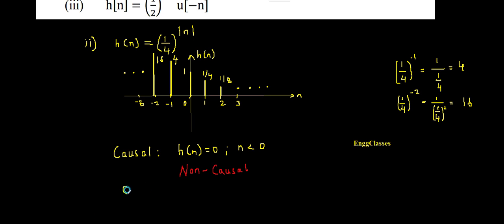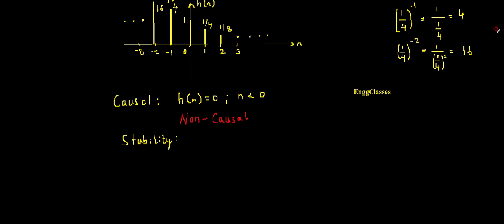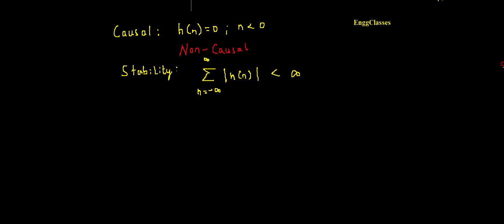The next step is to test this system for stability. For a system to be stable, its impulse response must be absolutely summable — that is, the summation from n equal to minus infinity to infinity of the magnitude of h(n) must be less than infinity. In our case, this becomes the sum of (1/4) to the power of the magnitude of n.